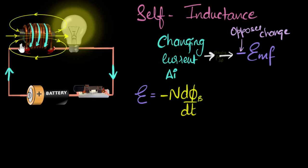Now, in our case, the flux is generated by the current. More current, more magnetic field, more flux. So we can say that in an inductor, flux is proportional to current.